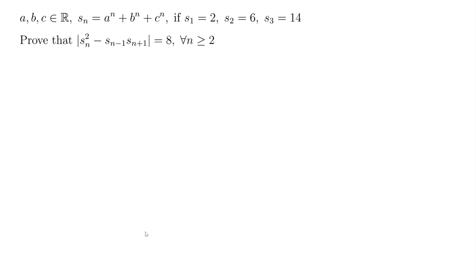So this one looks like this. If we know a, b, c are three real numbers and we denote s_n as a to the degree of n plus b to the degree of n plus c to the degree of n, and we know s_1 equals 2, s_2 equals 6, s_3 equals 14.